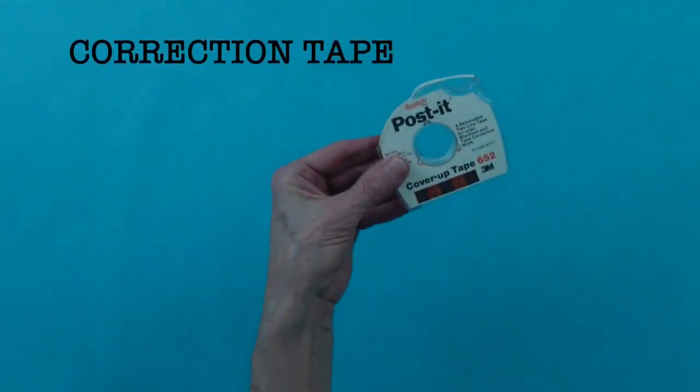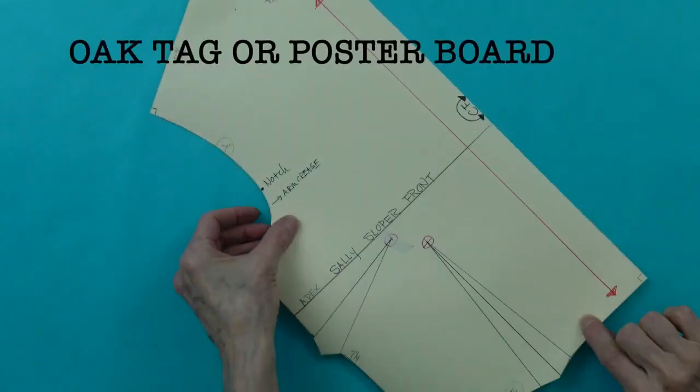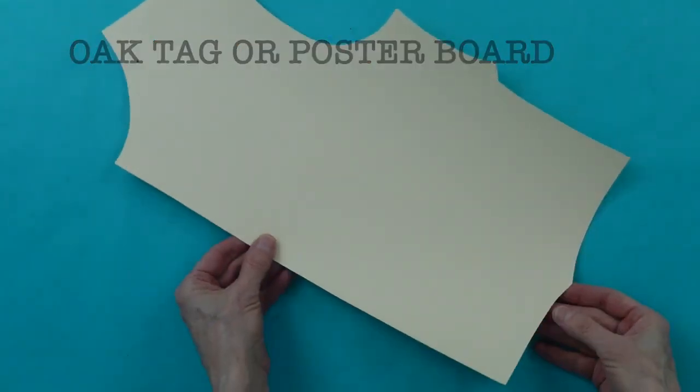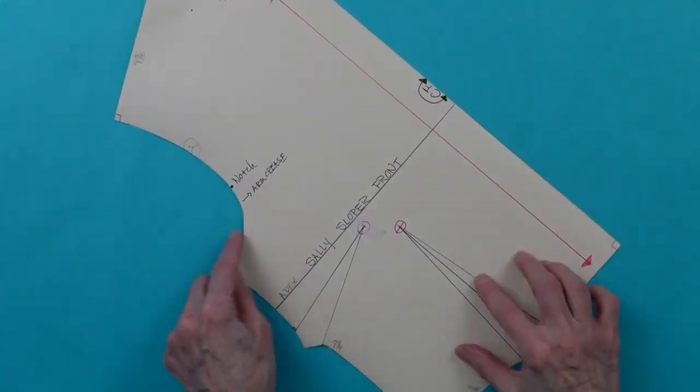One of my very favorites is cover-up or correction tape. Quarter to three-eighths inch is fine. And you need oak tag or poster board. It's a stiff paper and it's more durable than normal paper and you can trace around it.